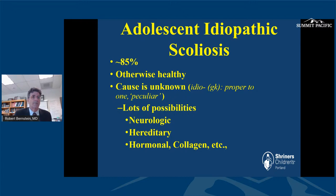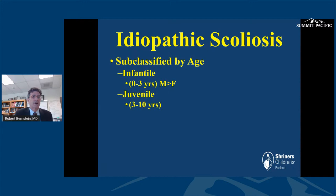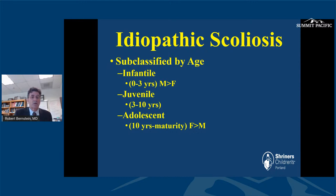We subclassify idiopathic scoliosis by age: infantile (0–3 years), which is more common in boys and may resolve on its own in mild cases; juvenile (3–10 years); and adolescent (after age 10), where more females are significantly affected. In the juvenile group, there is a higher incidence of intraspinal anomaly — up to 20% of children initially diagnosed with juvenile idiopathic scoliosis will have an abnormality on MRI. So those children, particularly those with a significant curve, are evaluated very carefully neurologically and frequently receive an MRI.